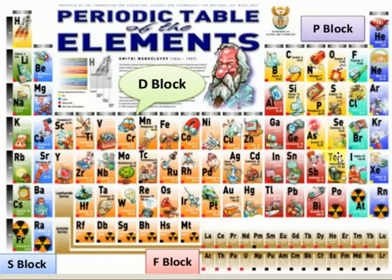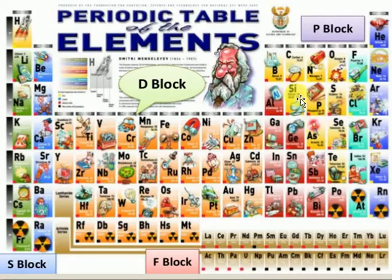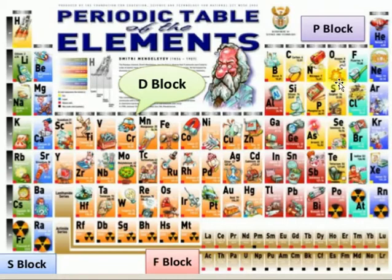These elements located on the right-hand side are P-block elements. Why they are called P-block elements? Because the differentiating electron enters into the P orbitals. In the P-block elements you will find six groups: Boron family, Carbon family, Nitrogen family, Oxygen family, Fluorine family, and Helium family.